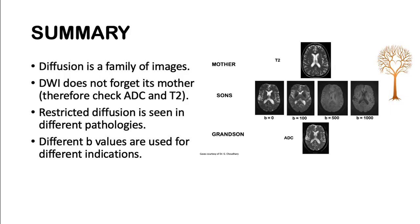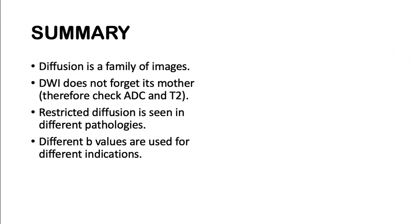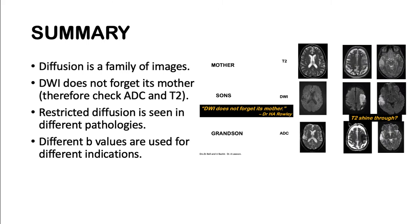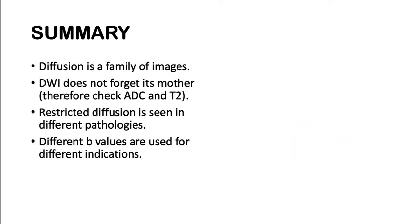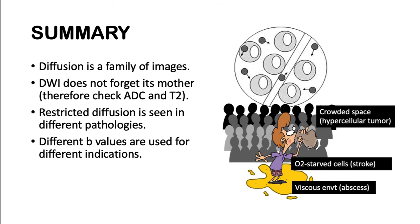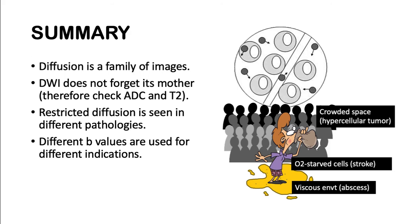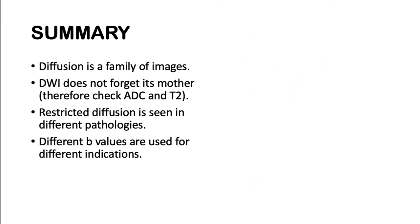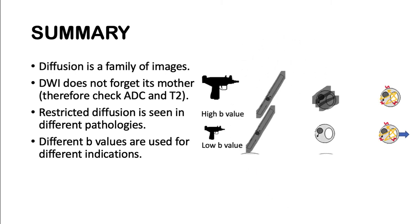In summary, diffusion is a family of images and DWI does not forget about its mother. Therefore, we need to check the ADC and the T2. Restrictive diffusion is seen in different pathologies — the hypercellular tumor where there is crowded space, oxygen-starved cells as in stroke, and viscous environments such as in abscess. We also discussed that different B values can be used for different indications.